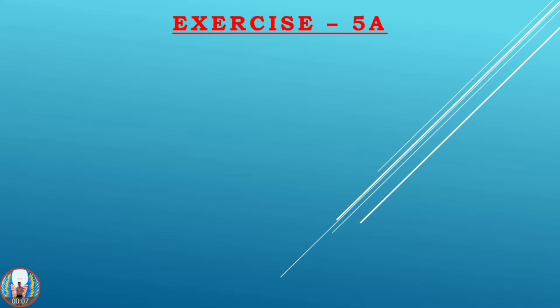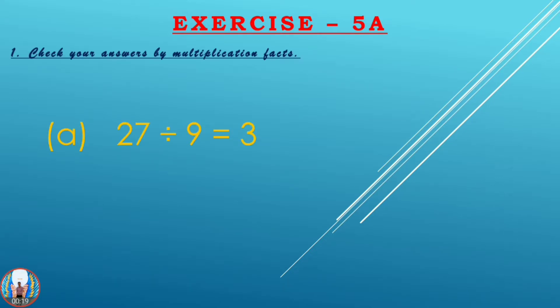Exercise 5a, first question: Check your answer by multiplication. As we already know, we can check whether our answer is correct or not by multiplying the smaller numbers to get the bigger number. Here in the first question, 27 divided by 9 equals 3. In division, the first number is always the greatest, but in multiplication the answer will be the greatest number.